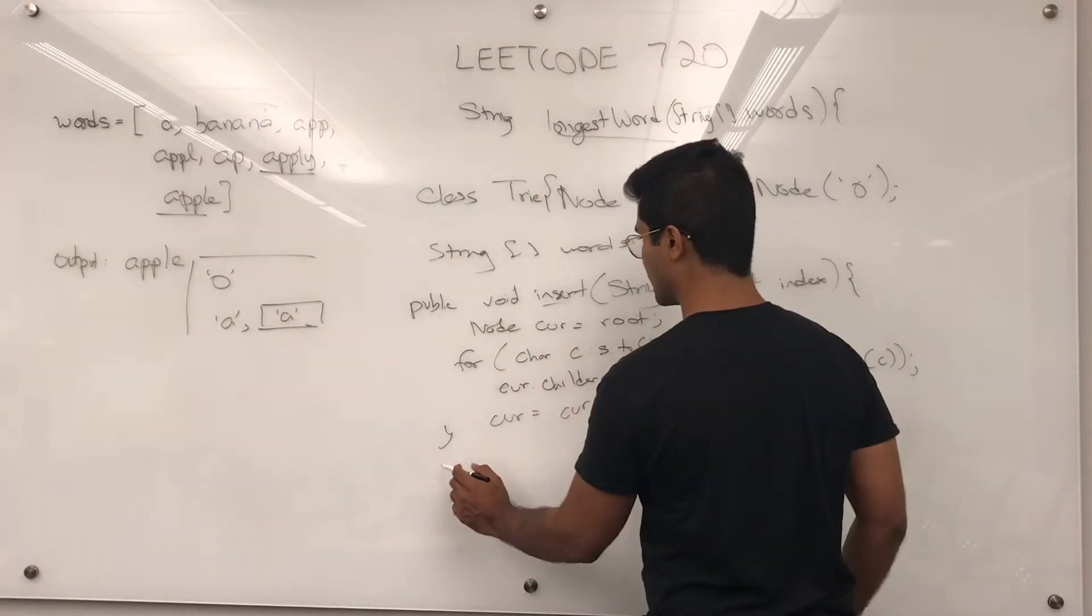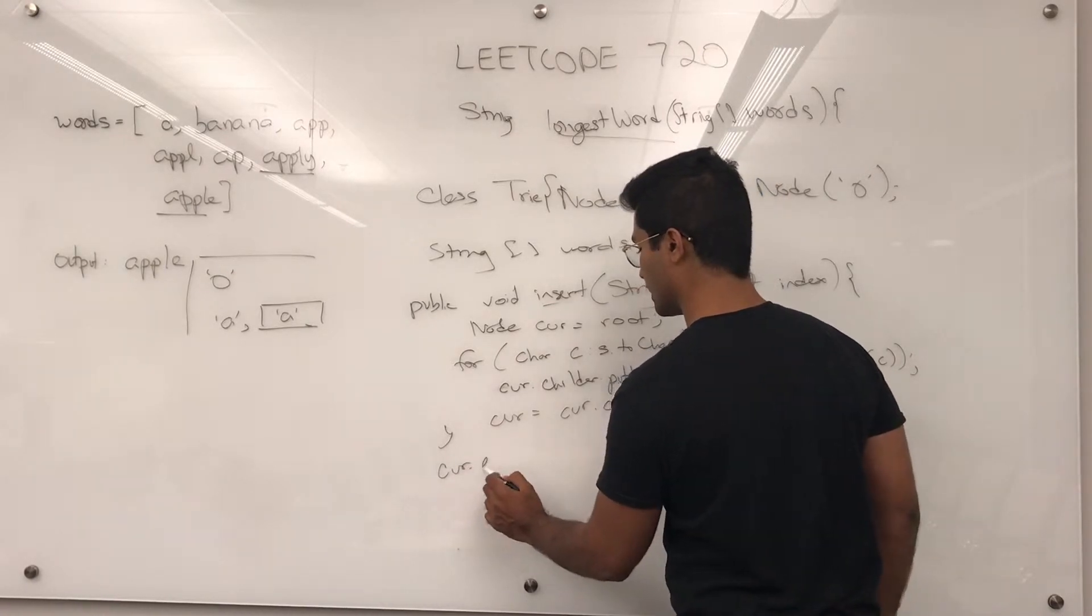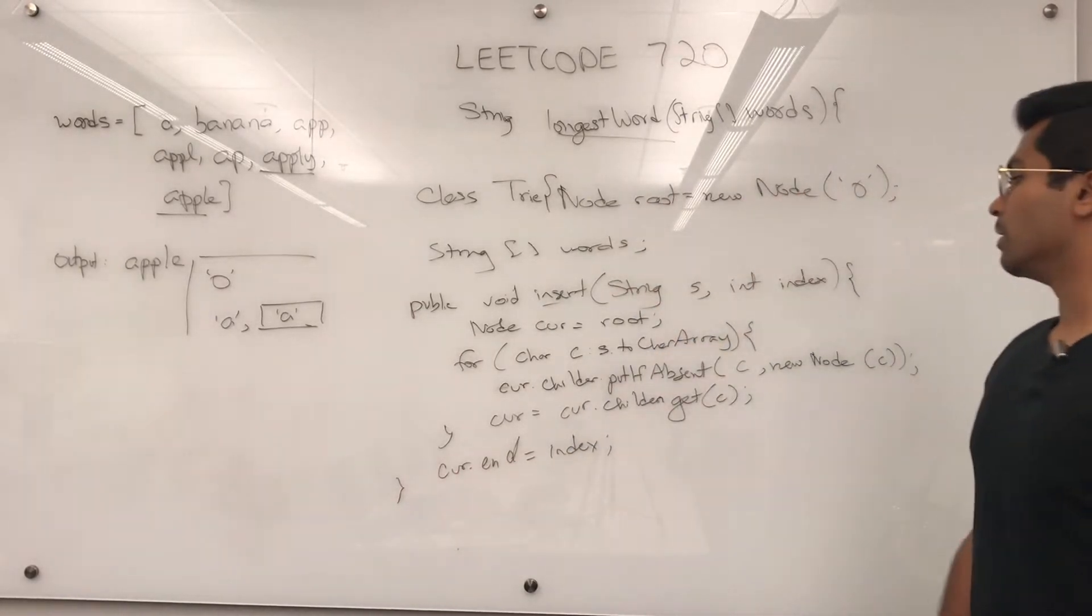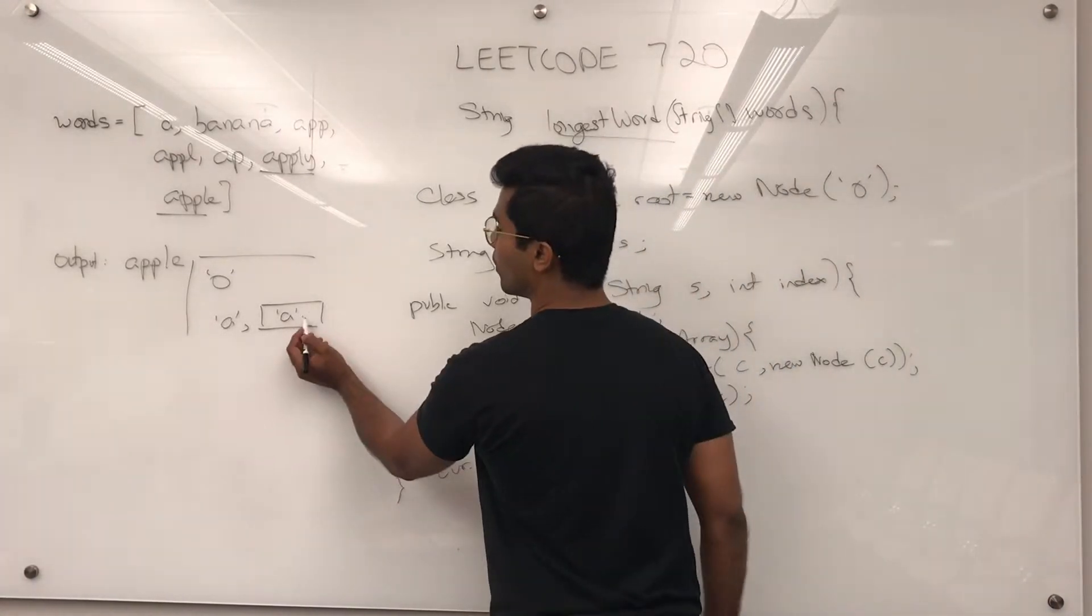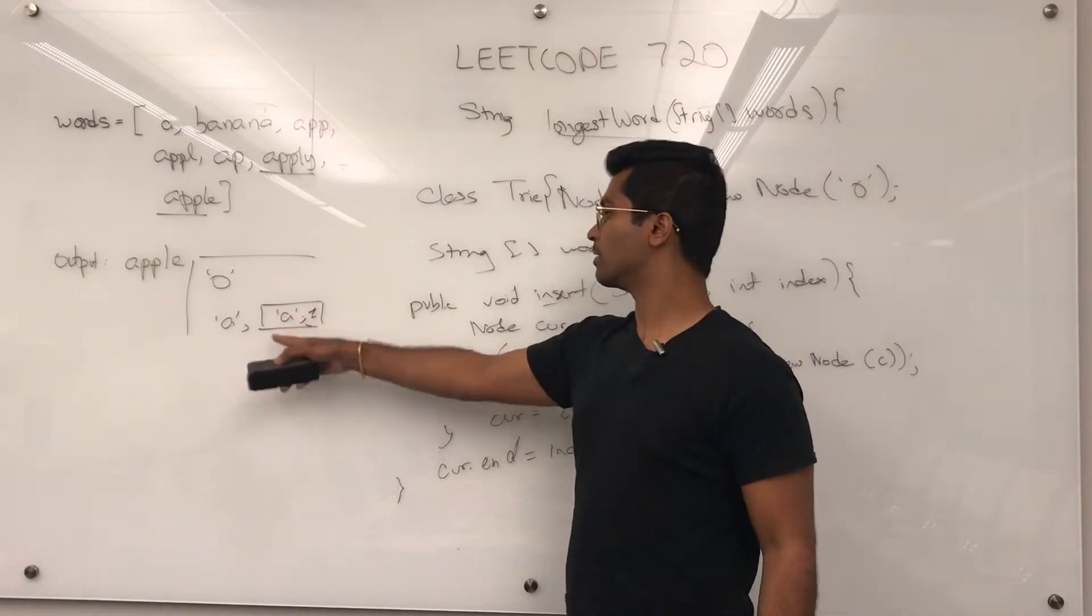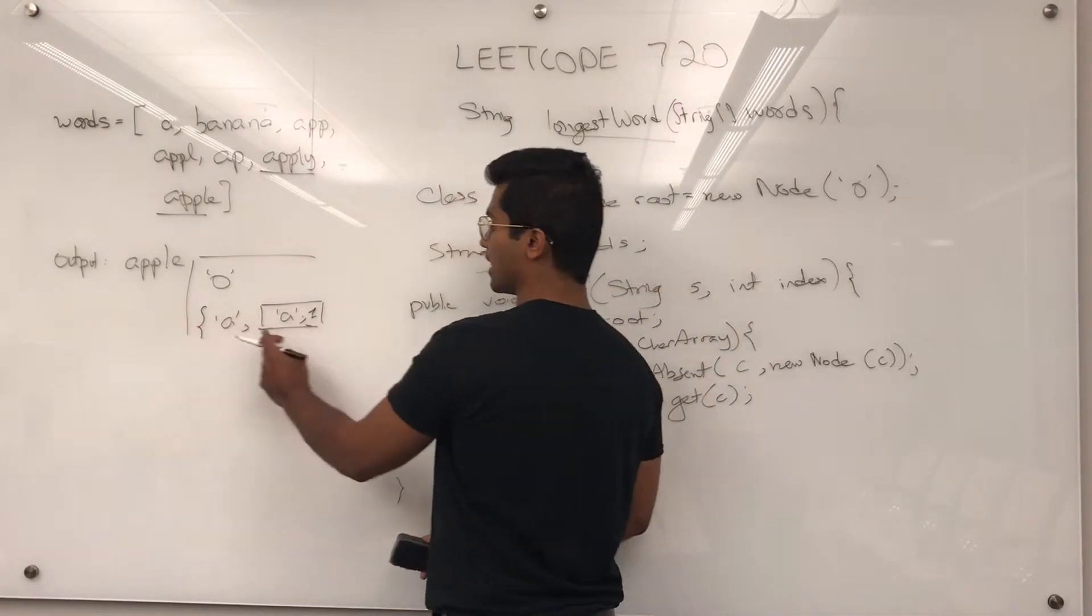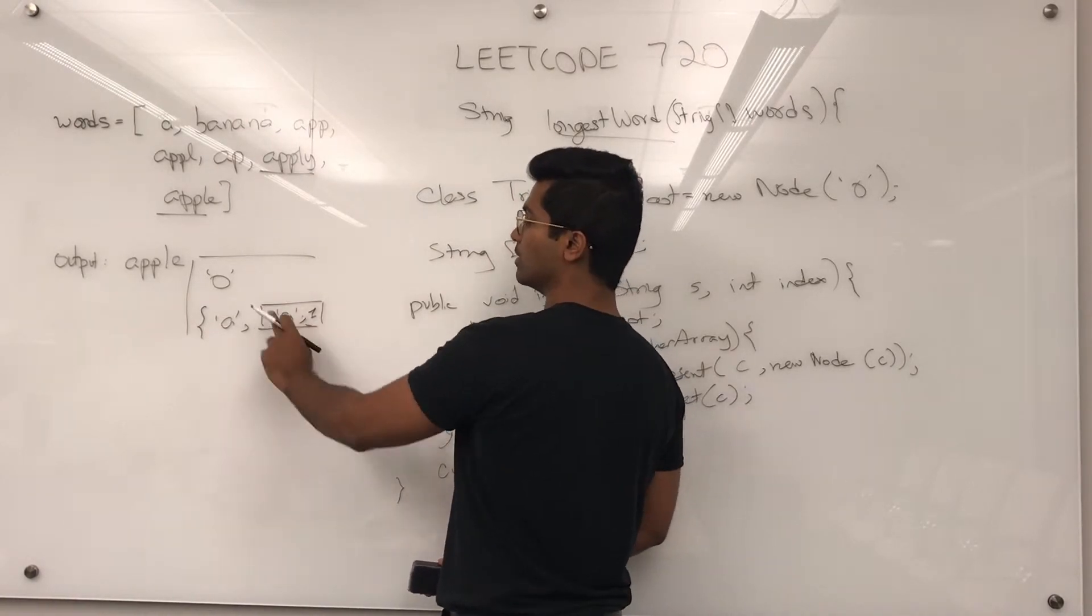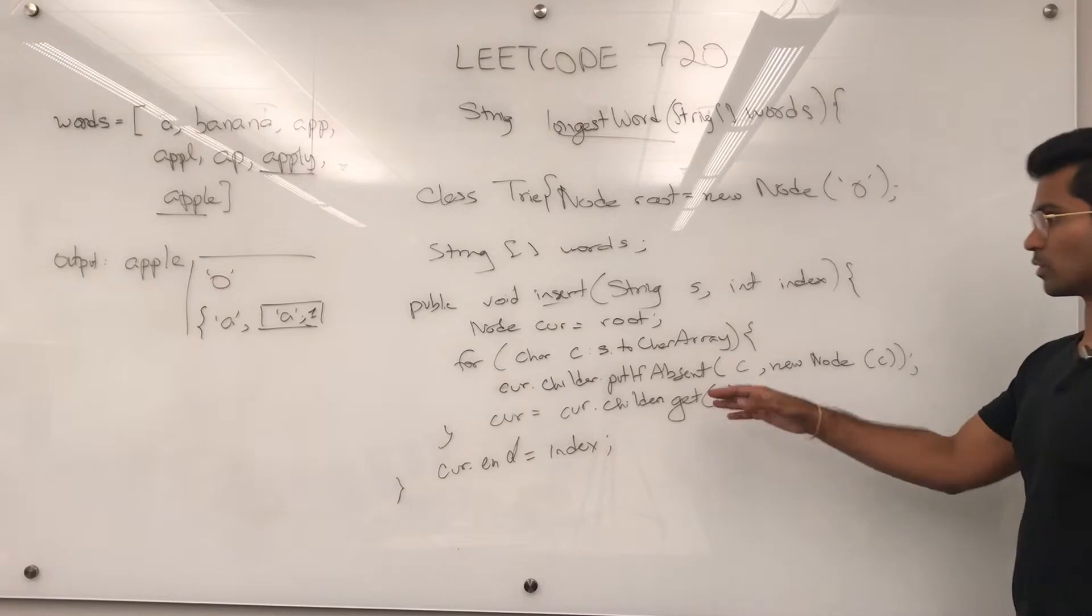Put if absent. And then we're going to set current equal to cur.children.get C. And once this for loop is done, we're going to set cur.end to index. So index is going to be one. I'll tell you why when I'm writing this one. But for the first time when we put A in there, A is going to be the key in the map and it's going to have a value of a node. The node itself is going to have this A in it and it's going to end with a one.